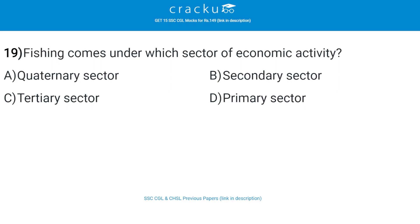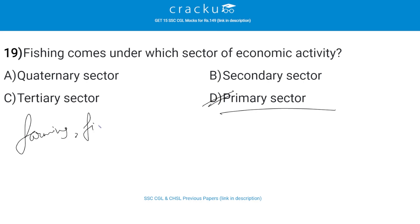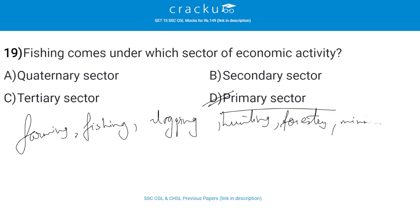Fishing comes under which sector of economic activity? The correct answer is D, the primary sector. The primary sector of the economy includes any industry involved in the extraction and production of raw materials, such as farming, fishing, logging, hunting, forestry, mining, etc.